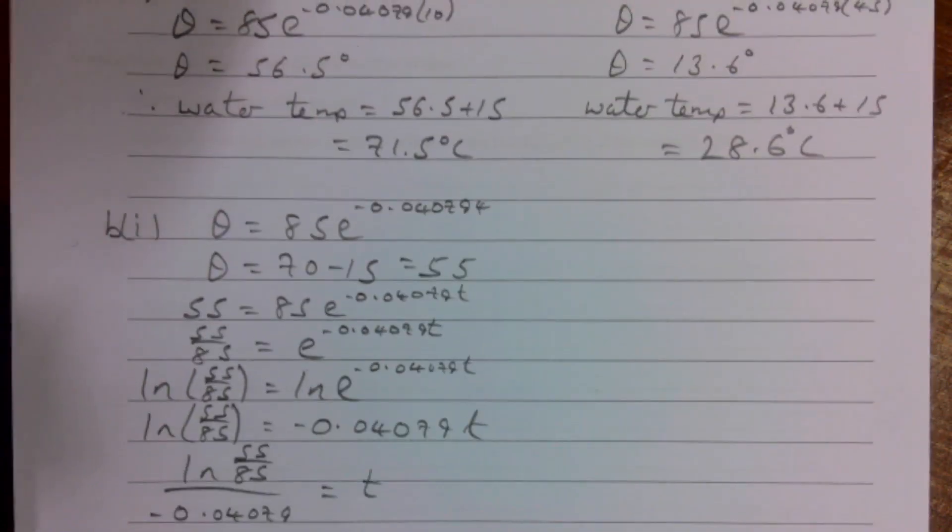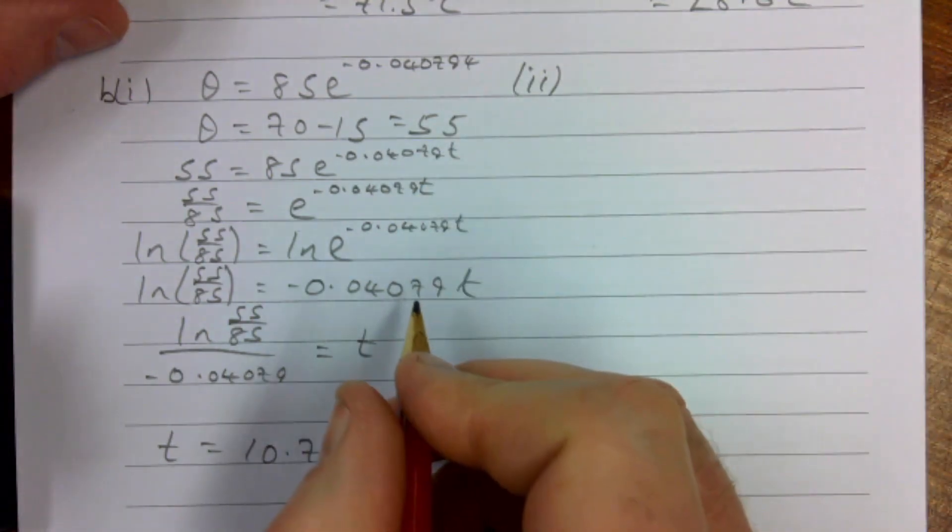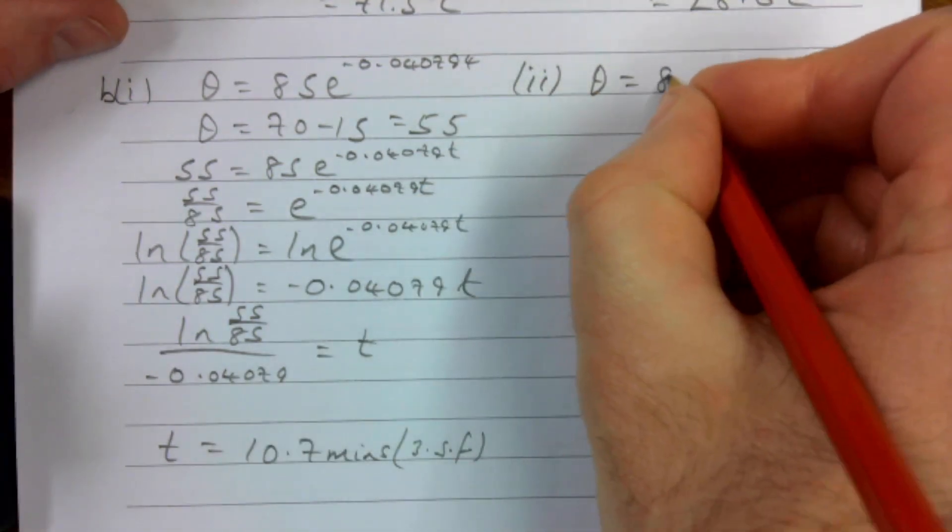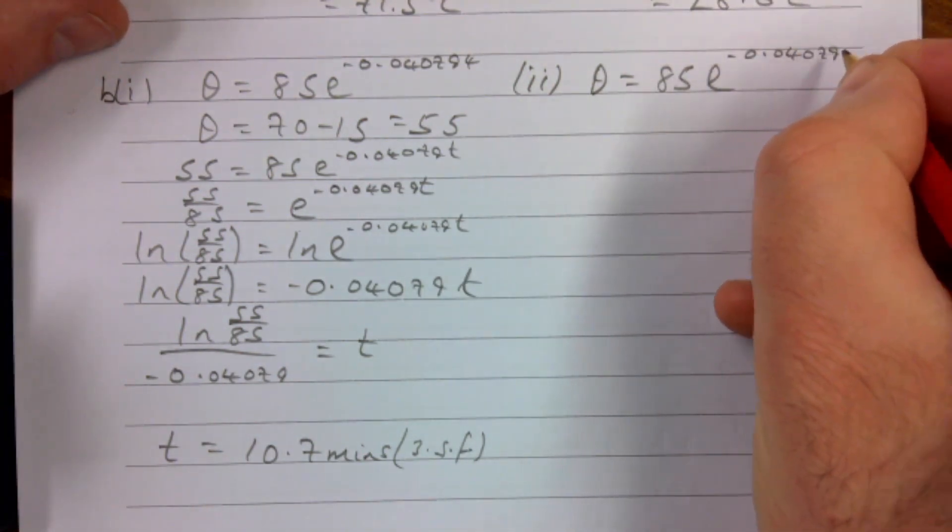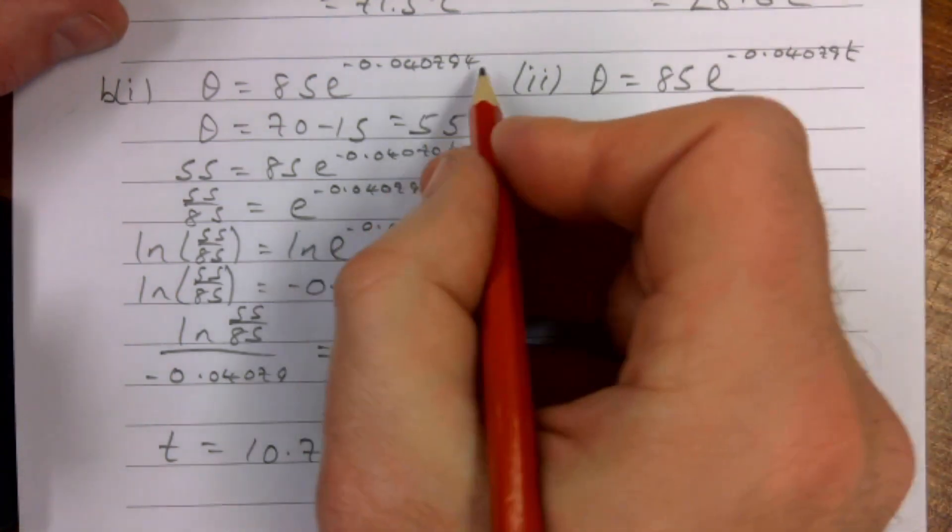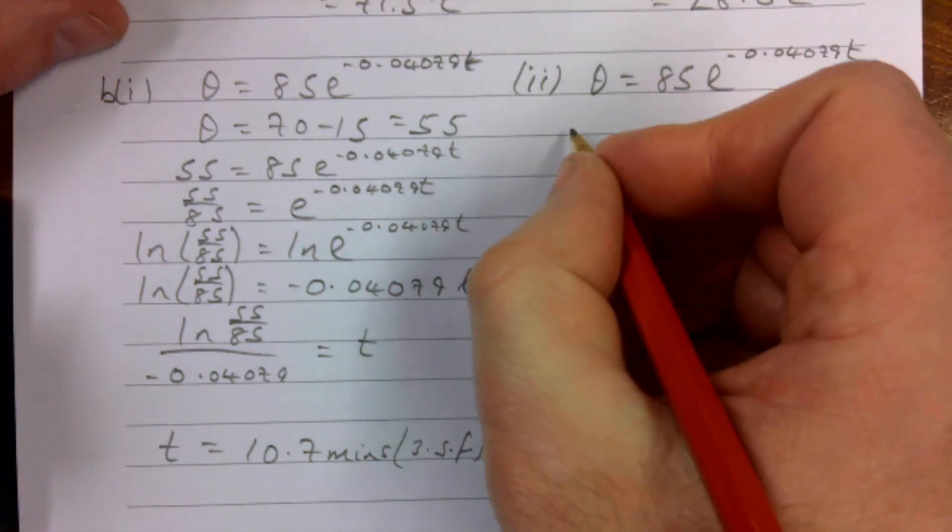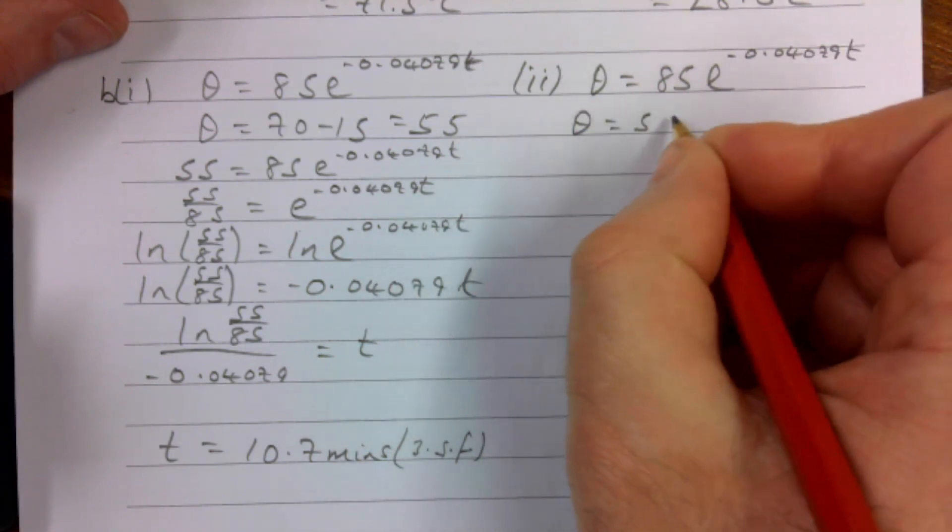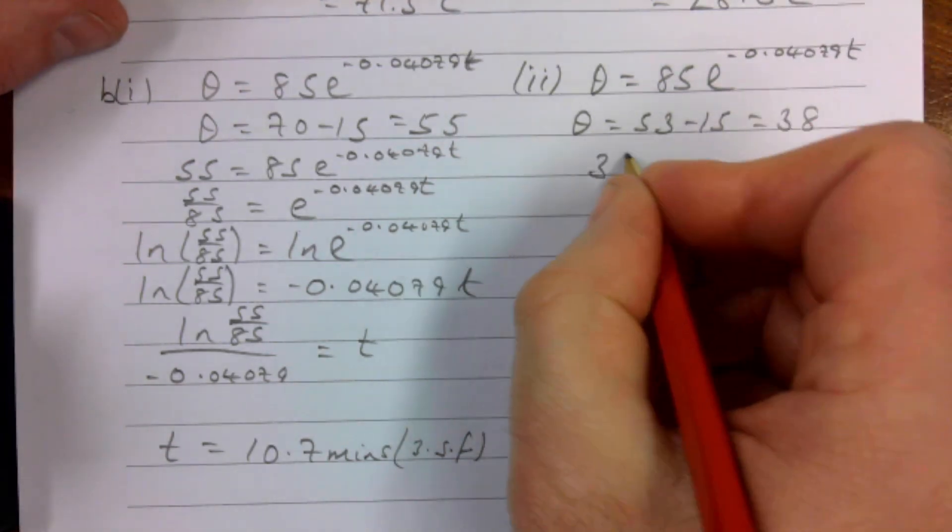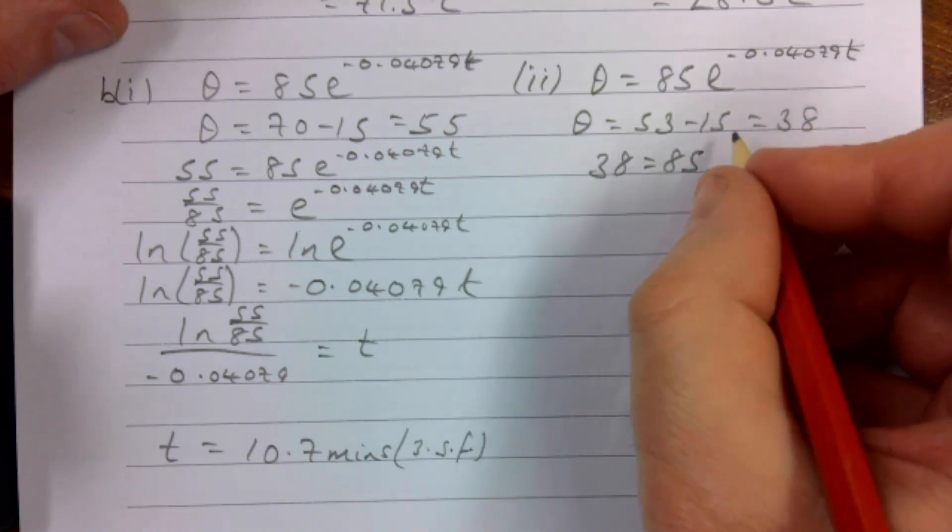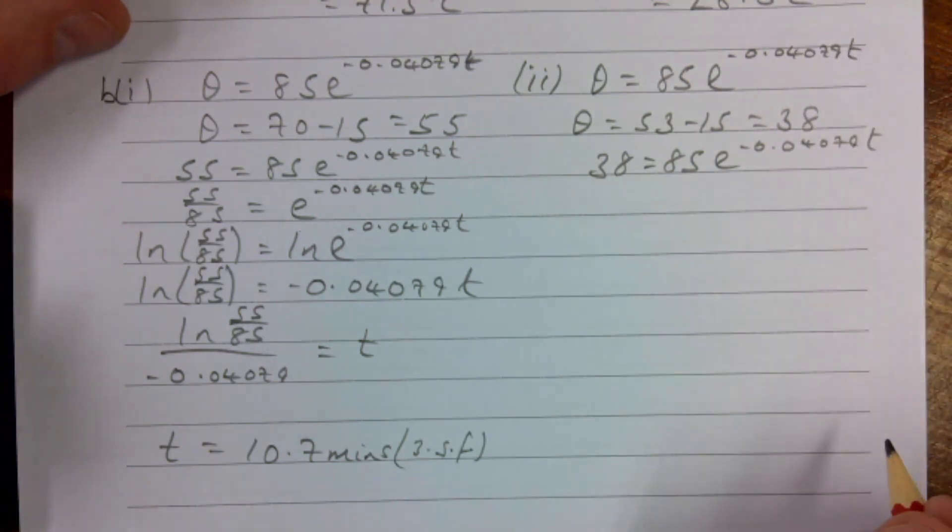Same again for part 2 and we are finally done with this. Part 2 wanted us to know θ = 85e^(-0.040790t). I haven't done a t there but that's okay, hopefully you spotted that. My θ, they wanted to know for 53, so I do 53 - 15, which is 38. 38 = 85e^(-0.040790t).